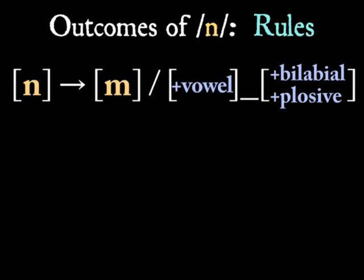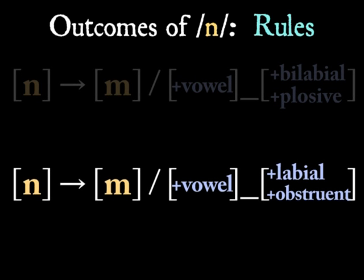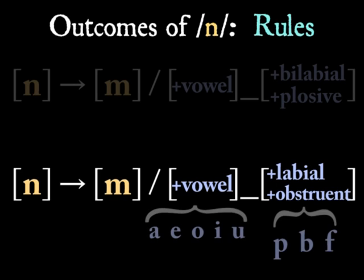The rewritten rule would look like this. /n/ becomes [m] in the environment where it is preceded by a vowel and followed by a labial obstruent. There you have a stronger rule that seems to apply throughout Spanish.